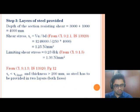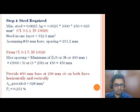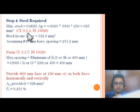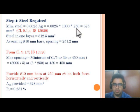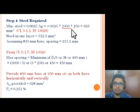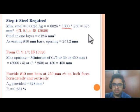Step 4: Steel required. Minimum steel required for the shear wall per IS 13920 clause 9.1.4: the minimum reinforcement ratio is 0.0025 in each direction. Minimum steel = 0.0025 × gross area = 0.0025 × 1000 × 250 = 625 mm² (per meter length). Steel in one layer = 625 / 2 = 312.5 mm².